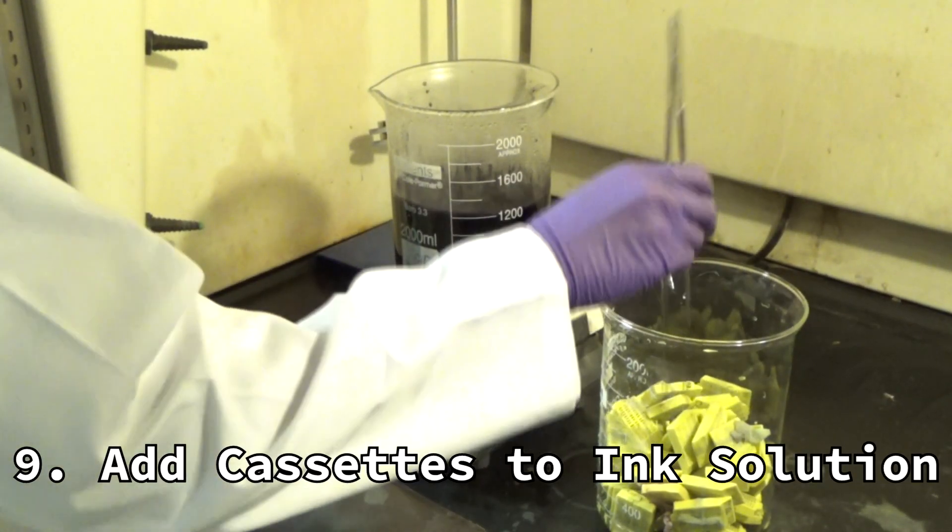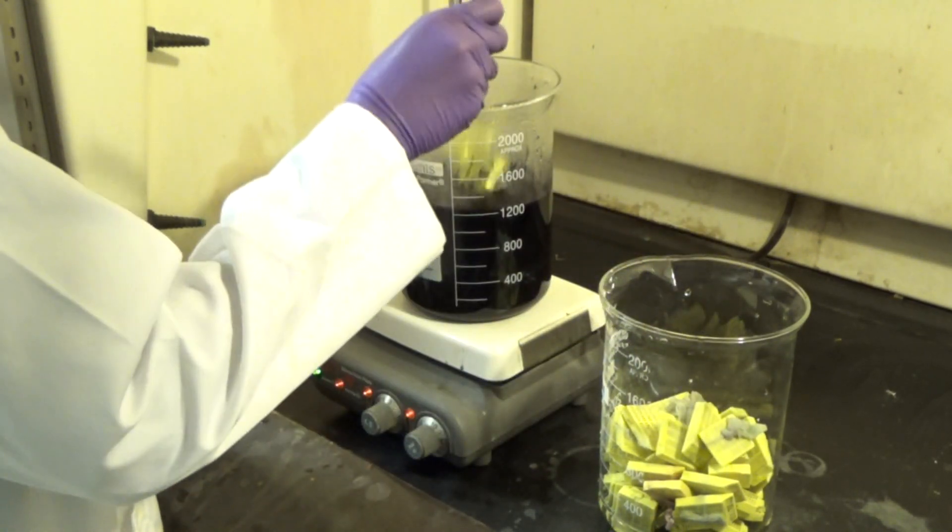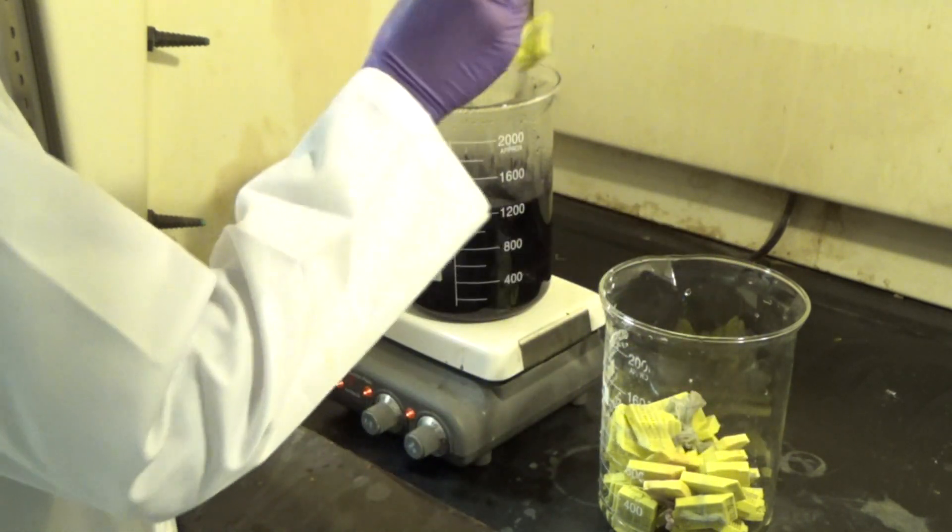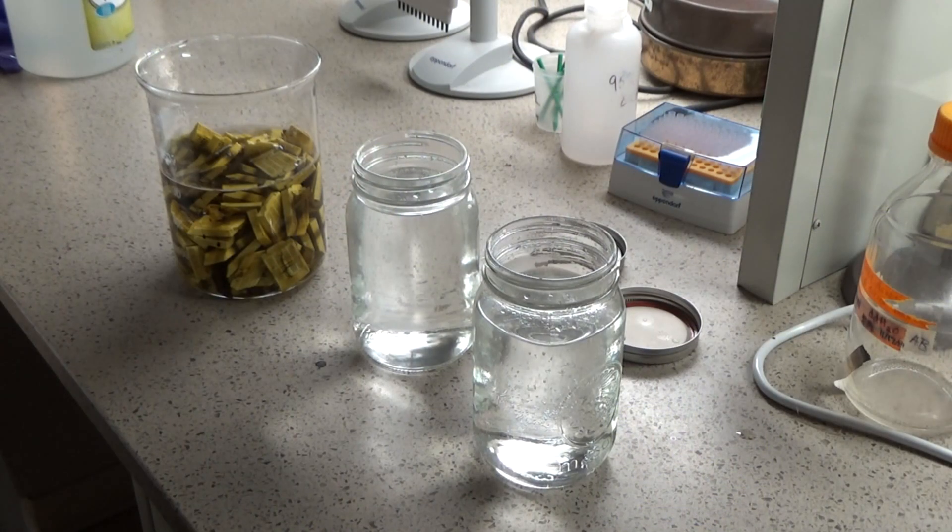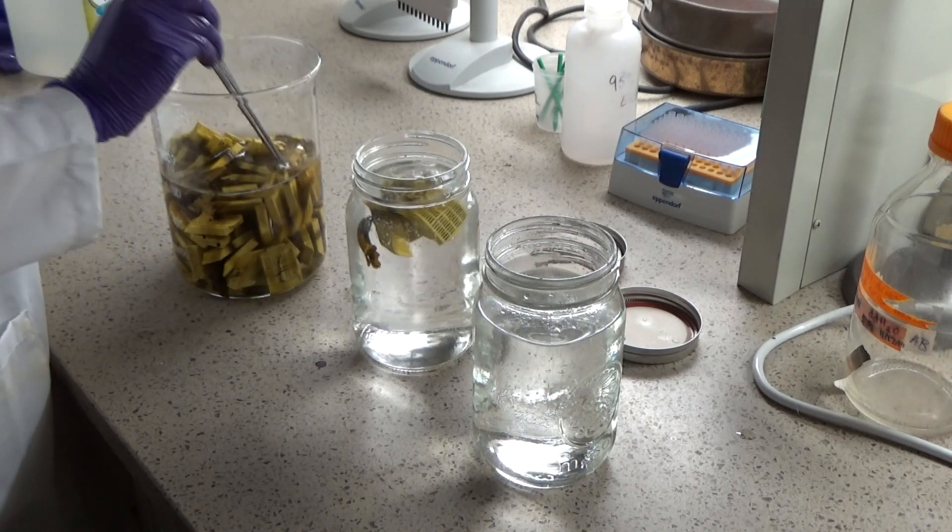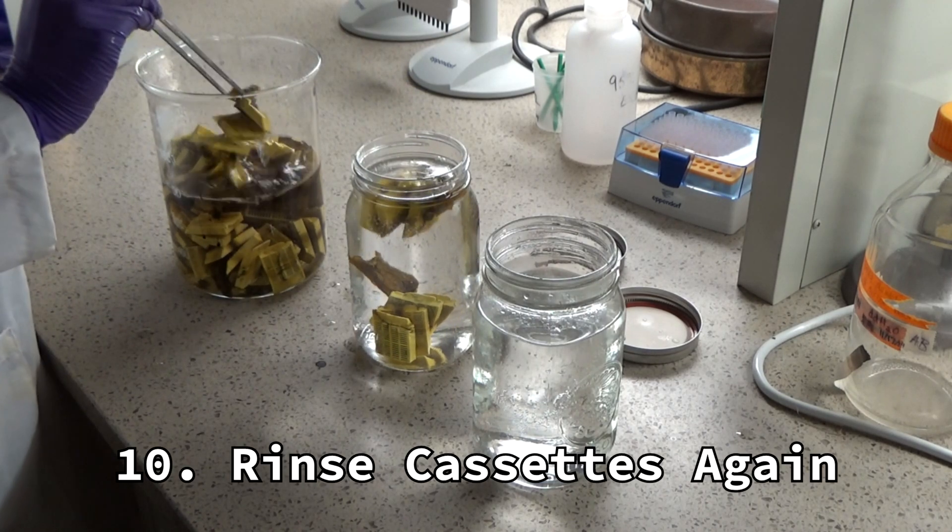Add your washed cassettes to the boiling ink vinegar solution on the hot plate. Let sit for three minutes as the solution boils. Pour off the ink vinegar solution into a chemical storage container. This ink can be reused.